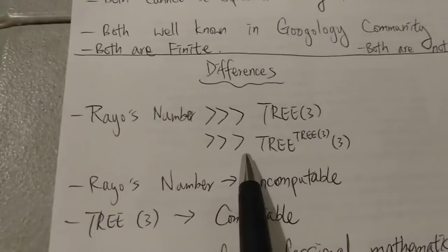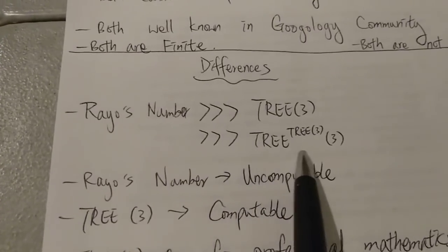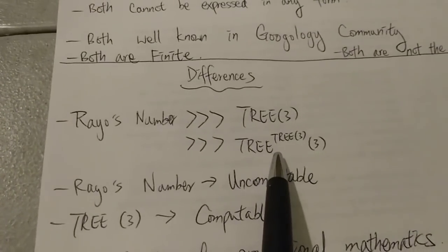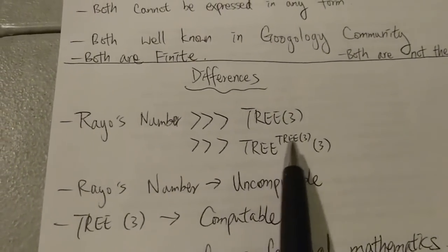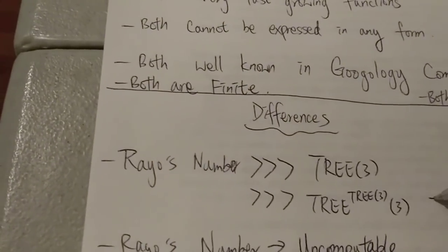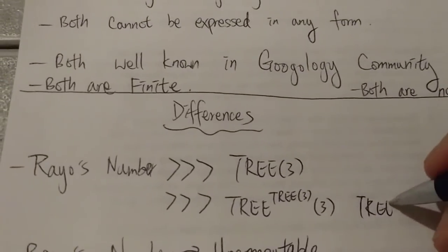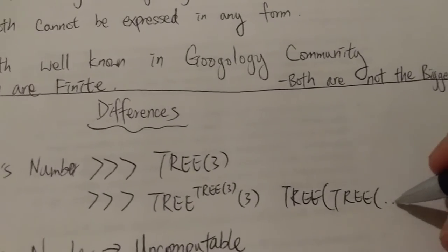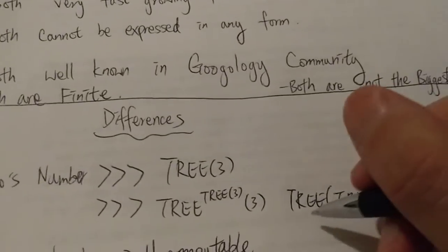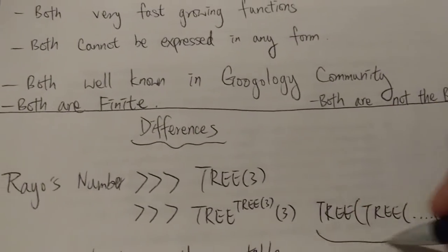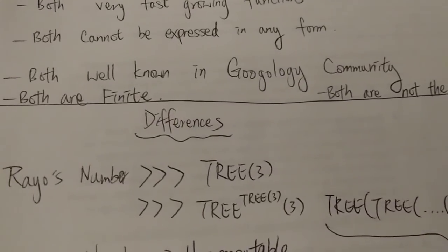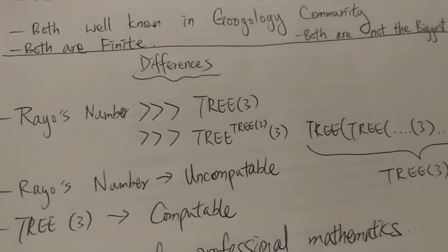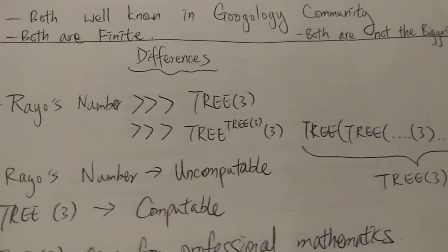So Rayo's number is even much, much, much bigger than TREE(3). So this one here means TREE(3) with TREE(3) number of 3. So it looks something like this: TREE of TREE(3), something like that, and there are TREE(3) number of 3 in here. So that's basically what this means over here. But yeah, this is even nowhere close to Rayo's number.